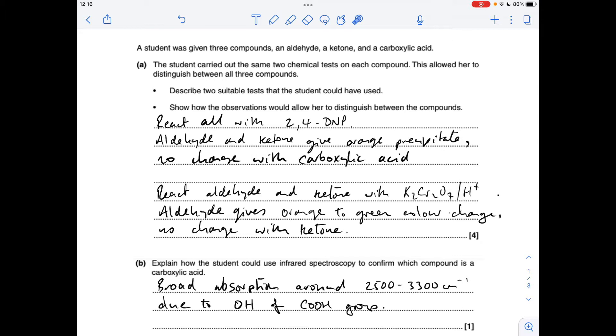Part B: only the carboxylic acid is going to give a broad absorption around this range of wavenumbers, and that's due to the presence of the OH of the carboxylic acid group.